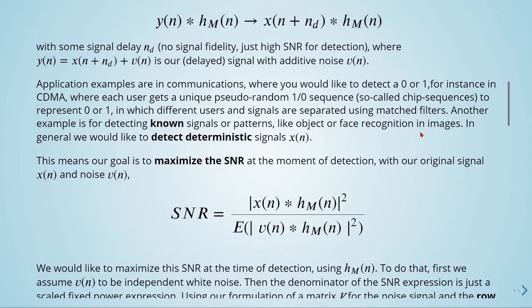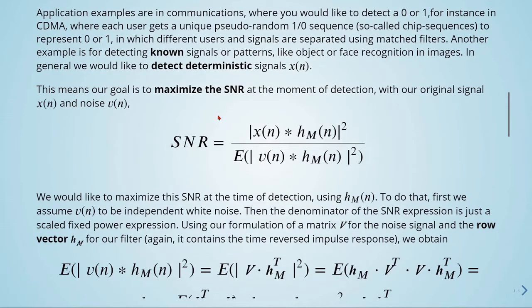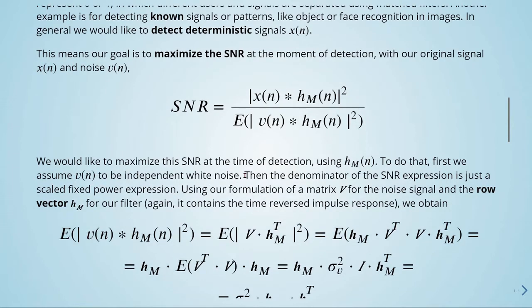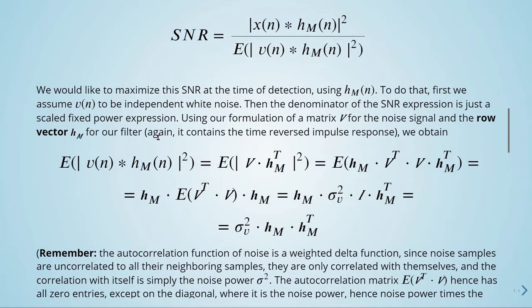The goal of the matched filter is to maximize the signal-to-noise ratio at the moment of detection, with our original signal X and noise V. So we have this expression here for signal-to-noise ratio. We would like to maximize the SNR at time of detection using H_M. And to do that, first we assume V to be independent white noise. Then the denominator of the SNR expression is just a scaled fixed power expression. So using our formulation of a matrix V for the noise signal and the row vector H_M for our filter, it contains the time-reversed impulse response. We obtain these equations here.